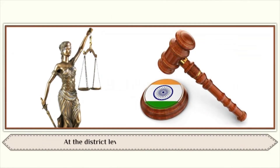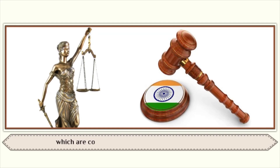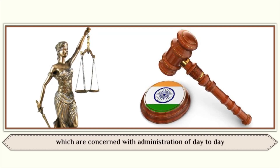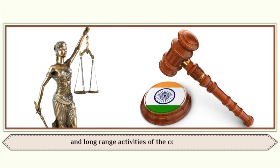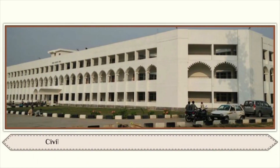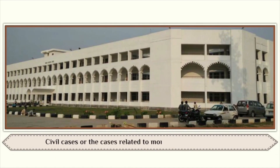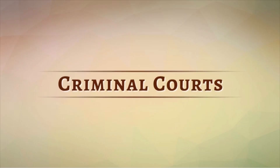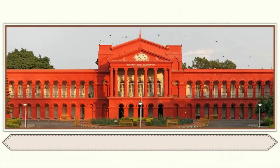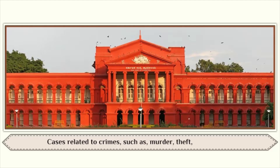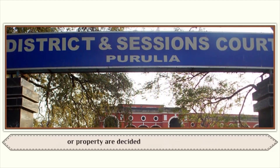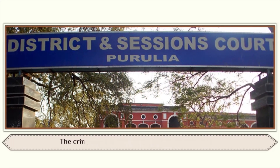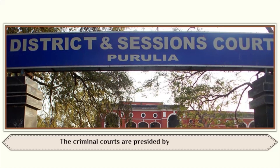At the district level, there are two types of courts concerned with the administration of day-to-day and long-range activities of the court system. Civil cases, or cases related to money or property matters, are decided in the civil courts. Cases related to crimes such as murders, theft, and threat to life or property are decided in the criminal courts, which are presided over by a session judge. The court of the session judge is the highest court in a district.